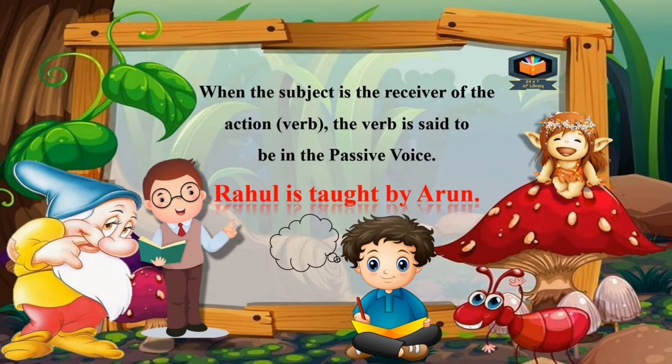When the subject is the receiver of the action or verb, the verb is said to be in the passive voice. For example: Rahul is taught by Arun. Here, Rahul is the receiver of the action, so this is in passive voice.